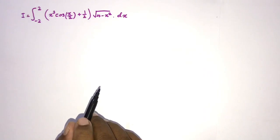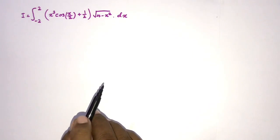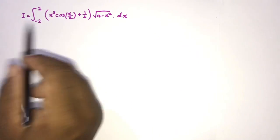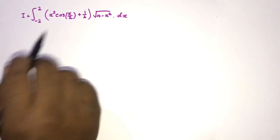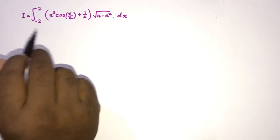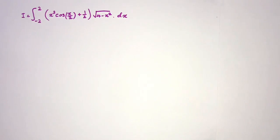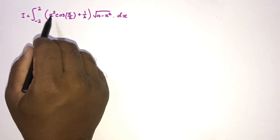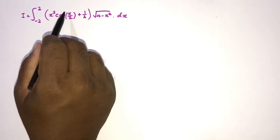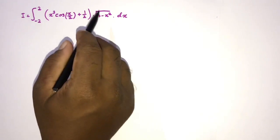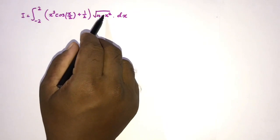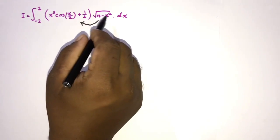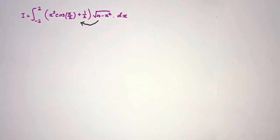Welcome to the mathematics channel. This integral is a very popular question. We have x cubed cosine of x over 2 plus one half, times the square root of 4 minus x squared. We can multiply through by the square root of 4 minus x squared.